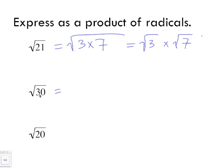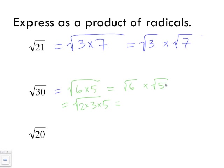Now let's find the square root of 30. We can write six times five, and simplify the six further as two times three — so we have two times three times five. This gives us radical six multiplied by radical five, which equals the radical of 30; or alternatively radical two multiplied by radical three multiplied by radical five.